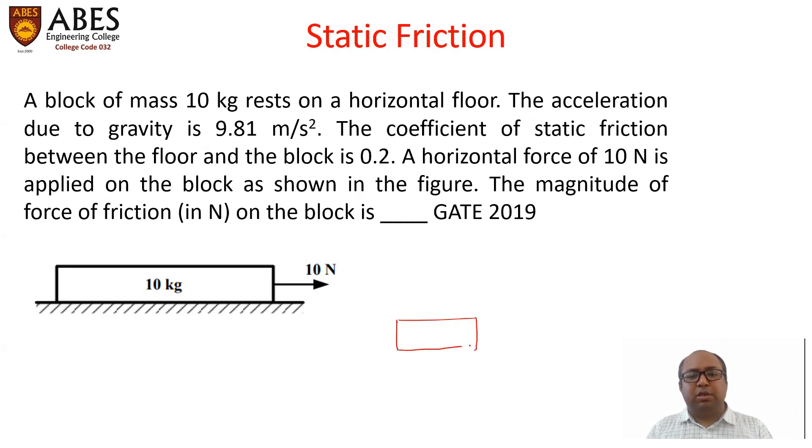So this box represents the block of mass. This is the applied force of 10 Newton. This is the weight of the object acting at the center of mass. Now let us come to the contact force. The horizontal component of the contact force is called friction, and the vertical component of the contact force is called normal reaction.